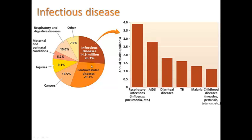Infectious diseases account for about 25% of deaths. Cardiovascular diseases like heart attacks or strokes comprise about 30%, and cancer is another major cause. The most common infectious diseases are respiratory diseases — influenza, pneumonia — then AIDS, diarrheal diseases like typhoid fever, tuberculosis, malaria, and childhood diseases like measles and pertussis. These six categories are the major types of infectious disease that people die from.